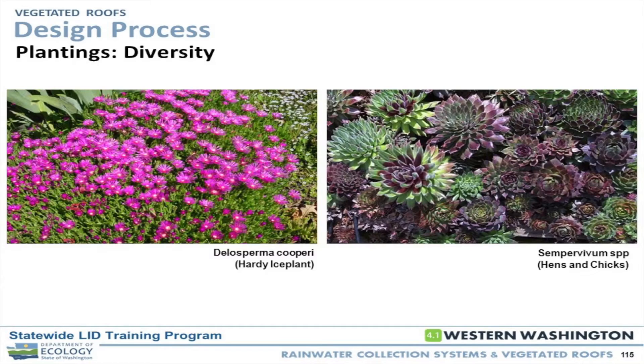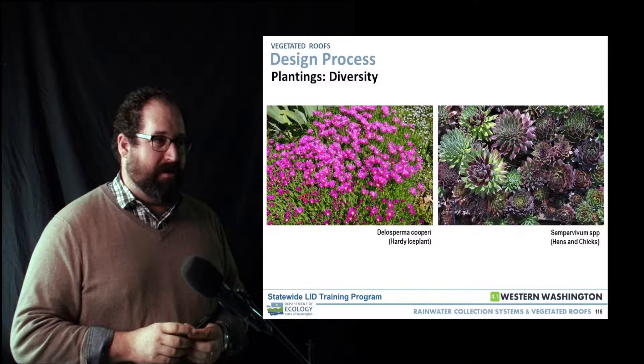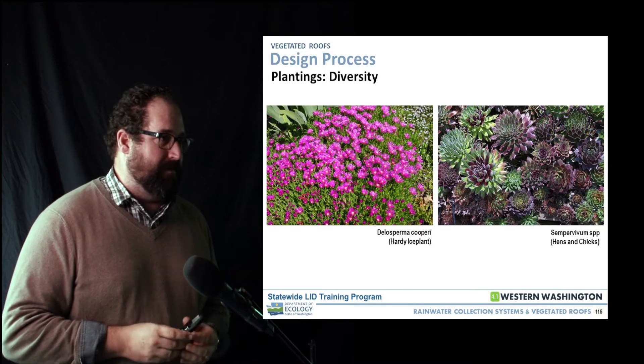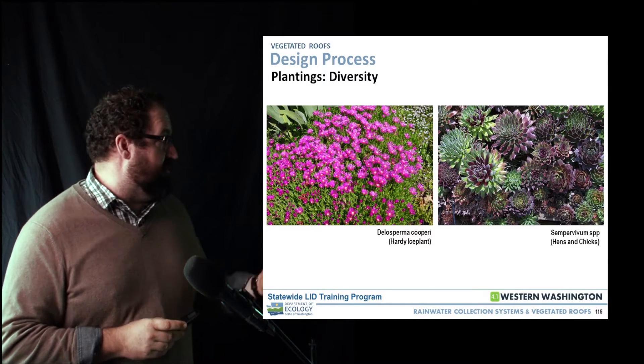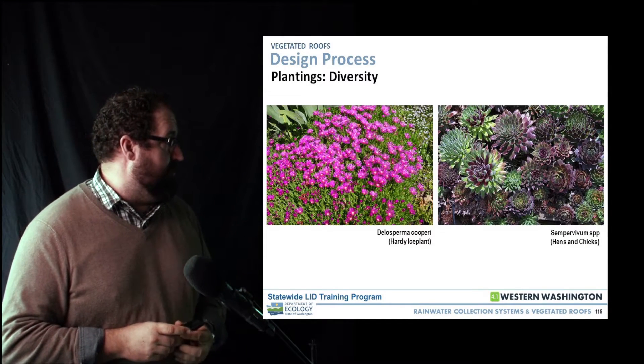This also eliminates the issue of large patches of deciduous sedums that end up with bare soil at certain times of year. Ice plant in California is a nightmare, but in the Pacific Northwest, because it's not invasive here, it's a great opportunity for a really hardy succulent vegetation with great blooms. Hens and chicks — self-dividing, self-sorting — are another option.